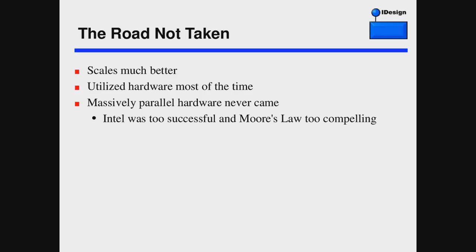This kind of solution scales much better. As traffic, transactions, and customers grow, you can easily add more processing units without diving into difficult distributed computing. Your hardware is also utilized near 100% of the time. If this is such a good idea, why have we never seen it? Because massively parallel hardware never came. Intel was just too successful with the 8080 and its successors. Moore's Law was too compelling: 'You don't have to clean up your act — next year you'll be twice as fast without doing anything.' So the hardware never came.